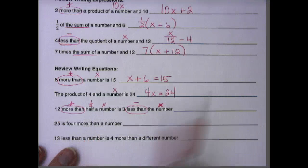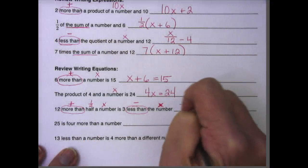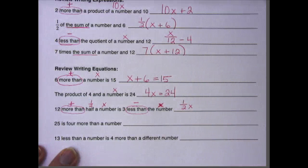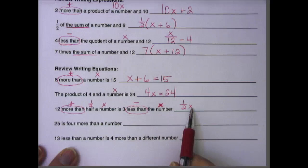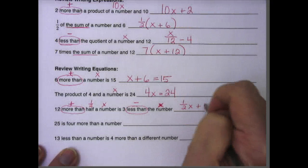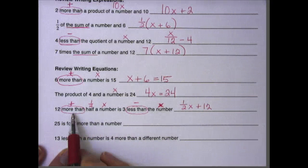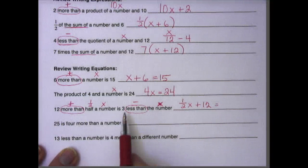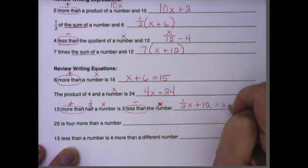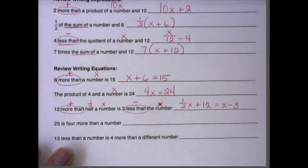So we have one half a number, one half times the number, because of or a in this case is going to mean multiply, one half x + 12. Remember we turned it around because of the turnaround words. Is means equals, 3 less than the number. So we're turning around again, x - 3.